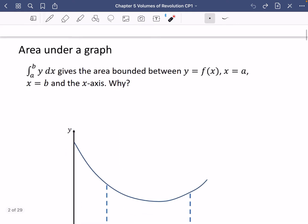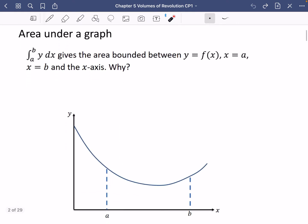First of all, I'm just going to recap some stuff from year one. We're going to talk about how you find the area underneath a graph. When you're looking for the area underneath the graph, we know that the integral of y with respect to x between a and b gives us the area bounded between y equals f of x, which is the line, x equals a and x equals b and the x axis. And so why does that actually happen?